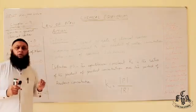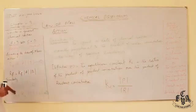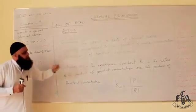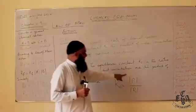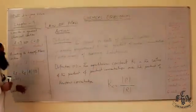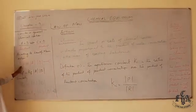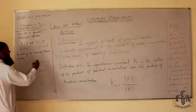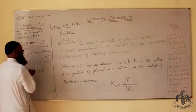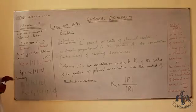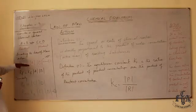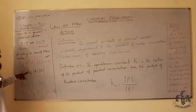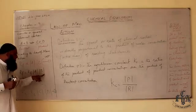At equilibrium, the rate of forward reaction equals the rate of reverse reaction. According to the Law of Mass Action, the rate of forward reaction is directly proportional to the concentration of A and B. The bracket notation indicates concentration in units of moles per decimetre cube. So the rate of forward reaction equals the forward rate constant multiplied by the concentration of A and the concentration of B.